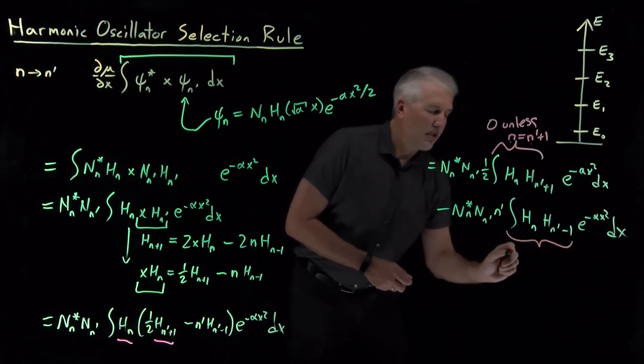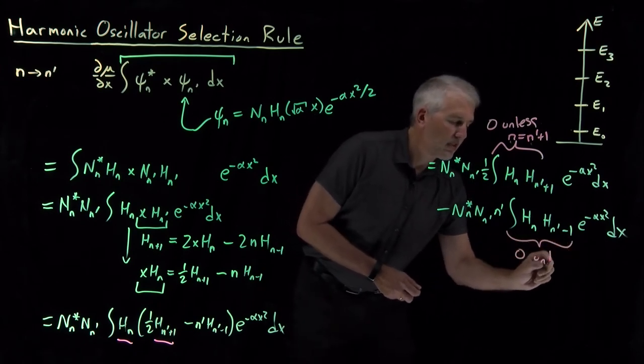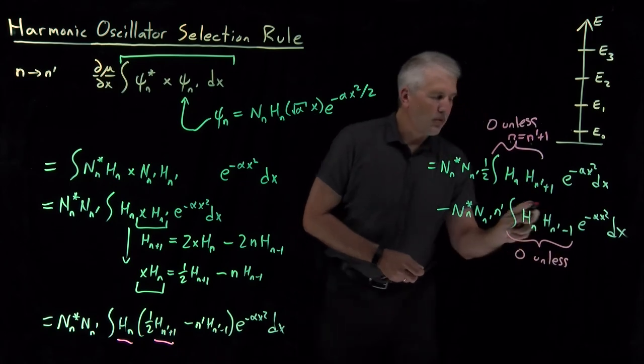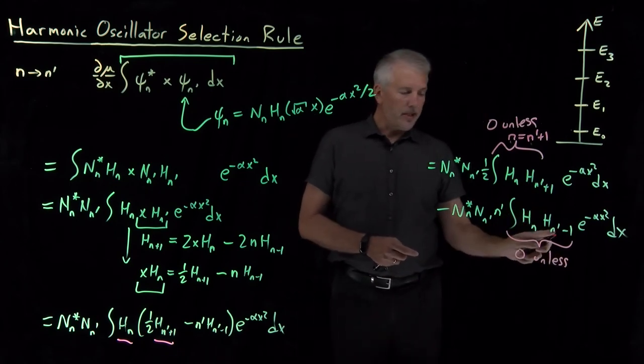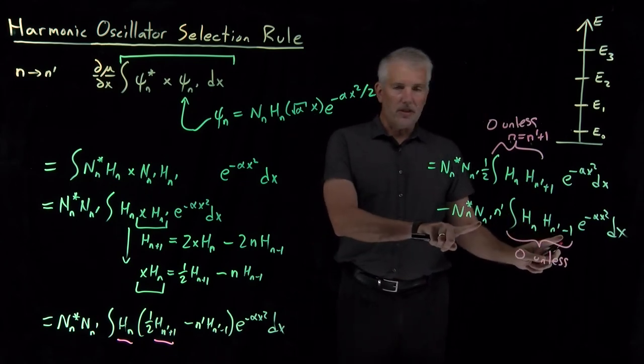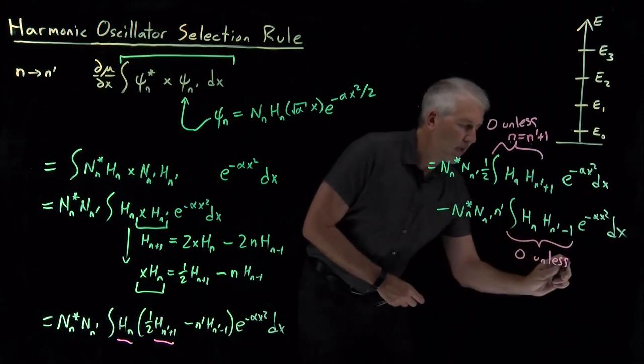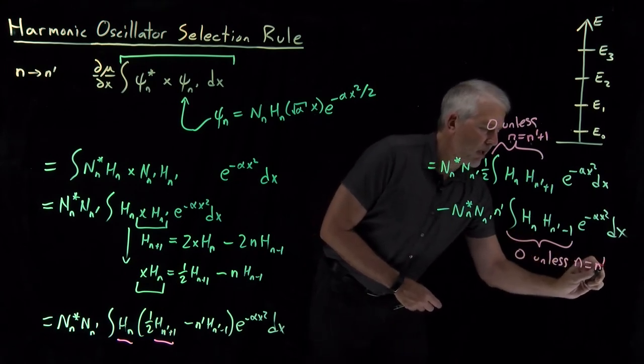Likewise, this integral will be 0 unless these two Hermite polynomials have the same index, unless these two wave functions are the same as each other. So that's 0 unless n is equal to n prime minus 1.